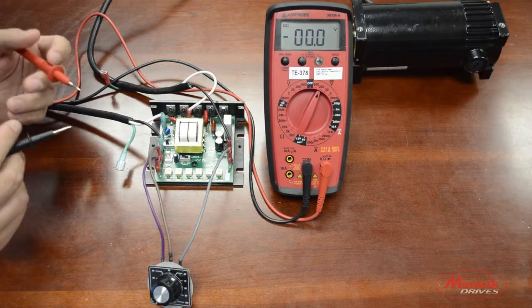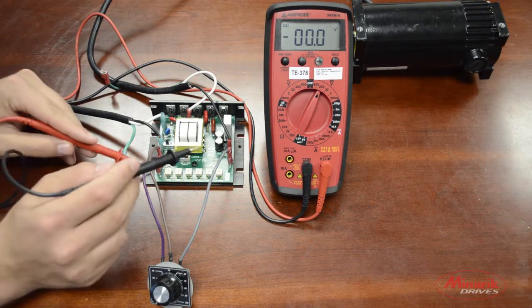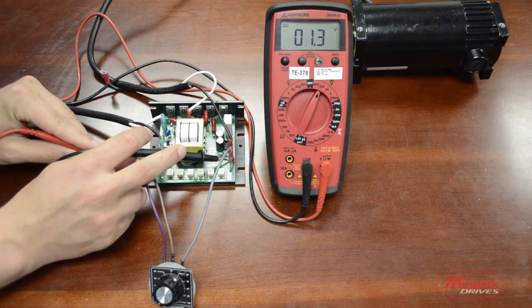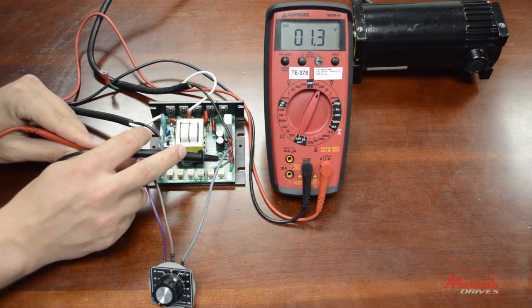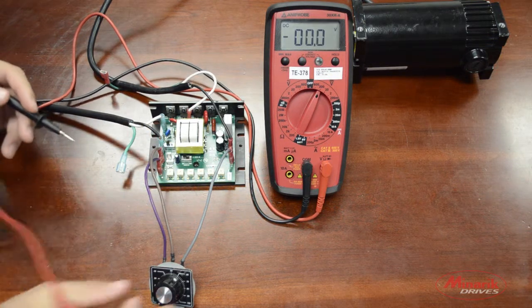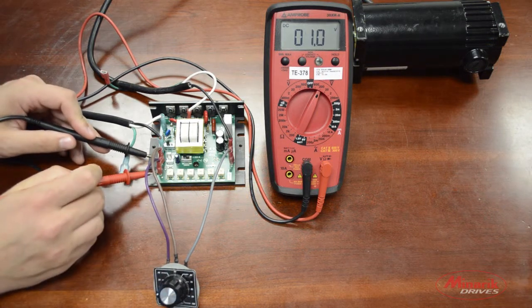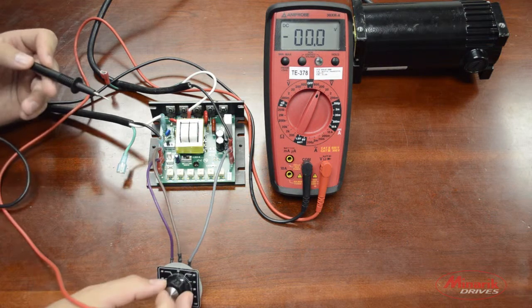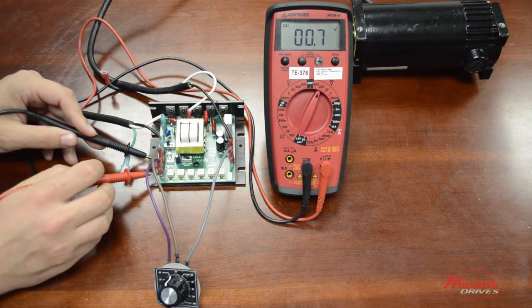The last thing we can check is to make sure the speed pot is working correctly. We have to first check to see if the drive is sending a voltage to the speed pot. This will be located by measuring S1 and S3. It should be around 1.4 volts. Now, to make sure the speed pot is working, we can turn up the speed pot and measure S2 and S3 to see if it's sending a reference voltage back. As you increase the speed pot, the reference voltage should decrease, as seen here.